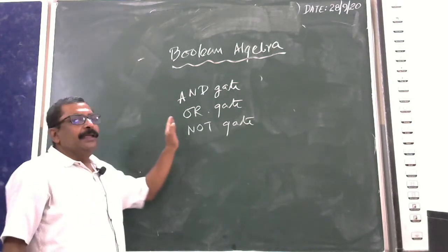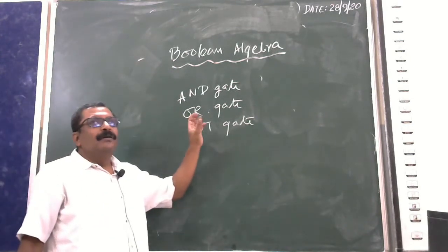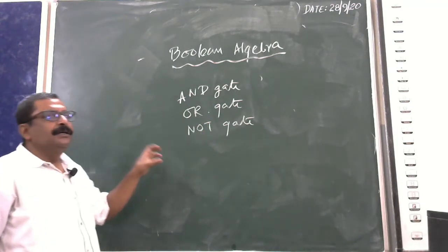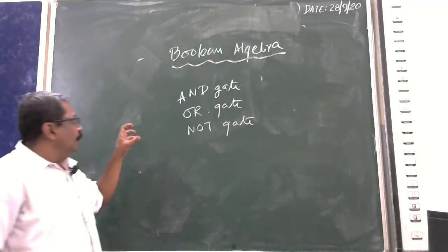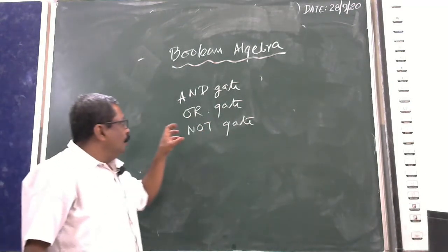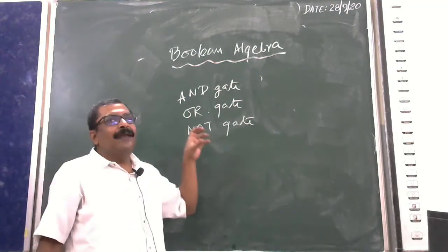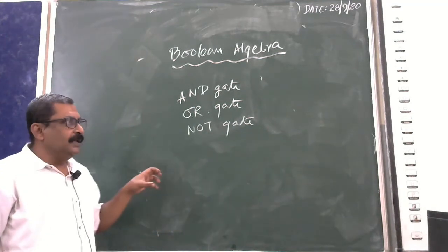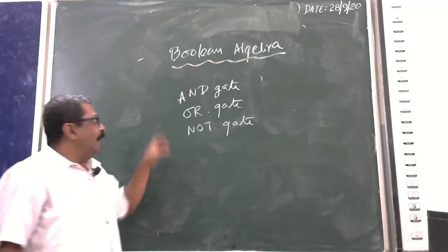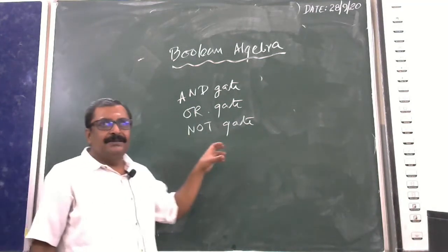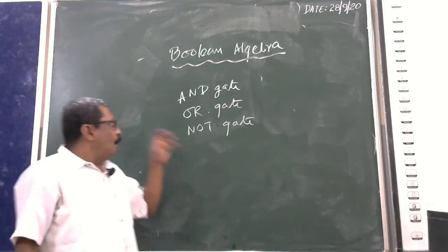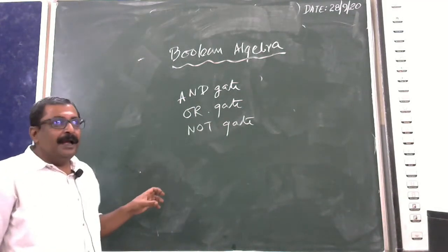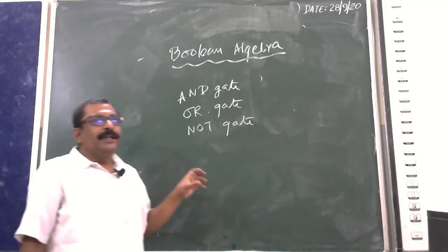When you pass different ON and OFF bits to a circuit — whether AND gate, NOT gate, or OR gate — you need to be aware of two things.